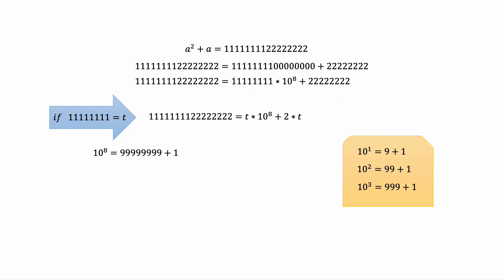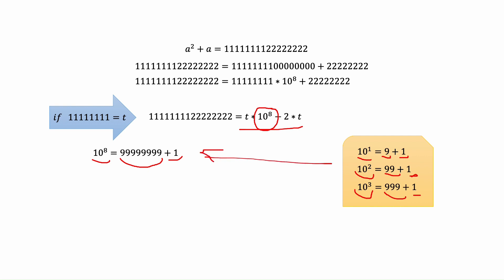Now we want to express ten to the power of eight in terms of t. Ten to the power eight equals eight nines plus one. To see why, let's look at smaller numbers: ten to the power one equals one nine plus one, which is ten. Ten to the power two equals two nines plus one. Ten to the power three equals three nines plus one. And now we can find the same structure for ten to the power eight.